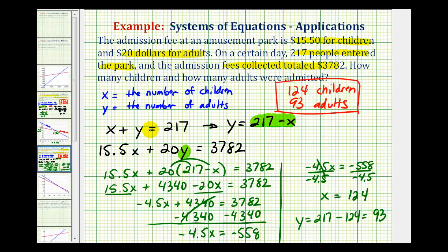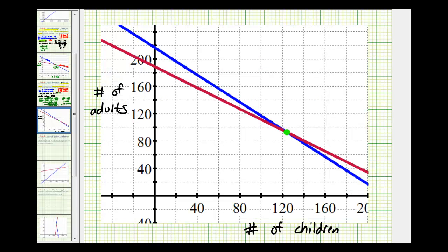Remember, if we were to graph these two linear equations on the same coordinate plane, the point of intersection would represent the same solution. So let's go ahead and check that. So here we have the graph of the two linear equations, and here's our point of intersection, where the x coordinate is equal to 124, which represents the number of children admitted, and the y coordinate is 93, which represents the number of adults admitted on that day. So this does verify our solution.